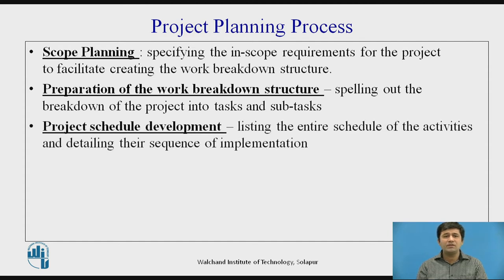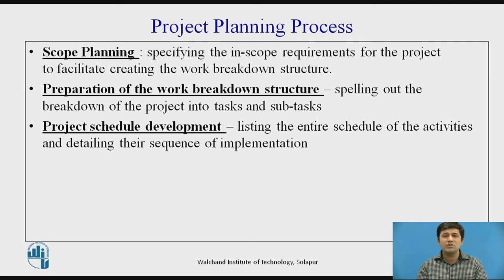Then comes the project schedule development. Once we have the major project and have defined tasks one, two, three, four, five, and their subtasks, we list the entire schedule of activities and detail the sequence of implementation. For instance, in the road-building example, each 100-meter section should have an exact date for completion and a person assigned to it, so we can clearly identify whether we are on track and take proper corrective action.